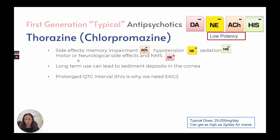Because thorazine reduces these neurotransmitters, we see: memory impairment from reduced acetylcholine, hypotension from reduced norepinephrine, sedation from reduced histamine, and motor or neurological side effects and NMS from reduced dopamine. Long-term use can lead to sediment deposits in the cornea, and prolonged QTc interval can occur — which is why patients need an EKG. Typical dose is 25 to 200 milligrams a day, but can reach up to 2 grams a day for mania.